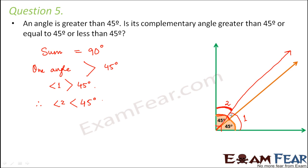So if one angle is greater than 45 degrees, the other has to be less than 45 degrees. Similarly, had angle 1 been less than 45 degrees, in that case angle 2 would have been more than 45 degrees. With this diagram it is very clear why angle 2 will be less than 45 degrees — because angle 1 is more than 45 degrees and has taken some part from this 45 degrees, so the remaining part is angle 2.